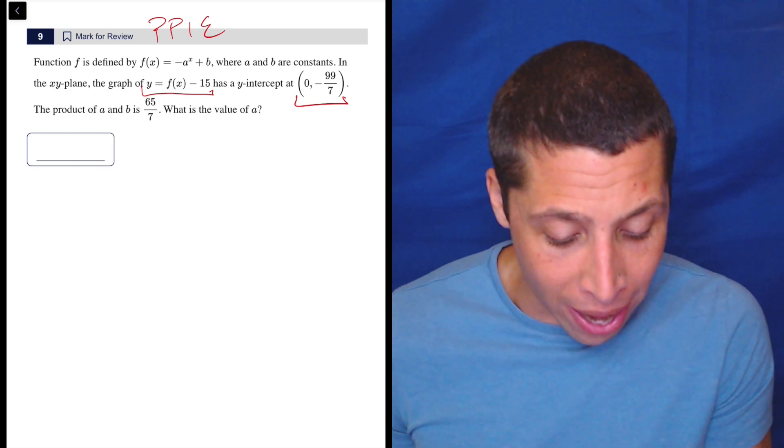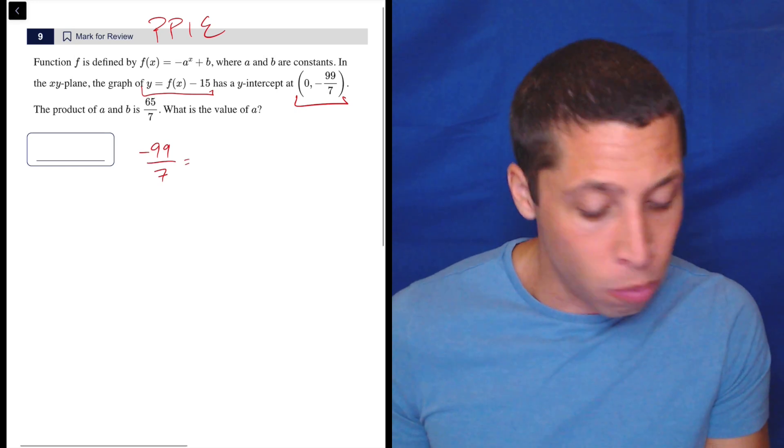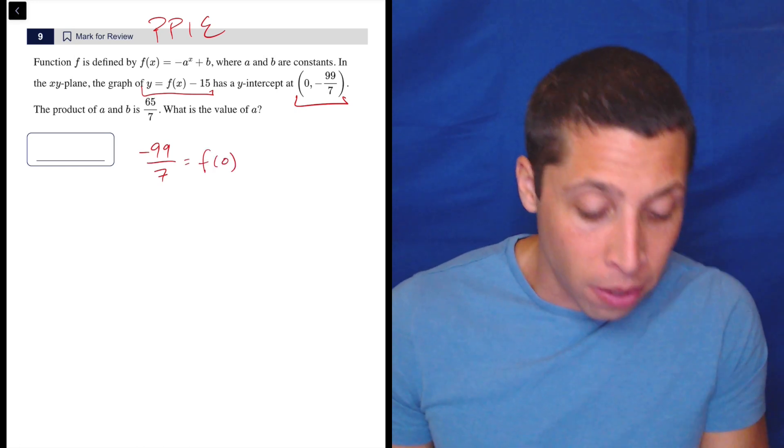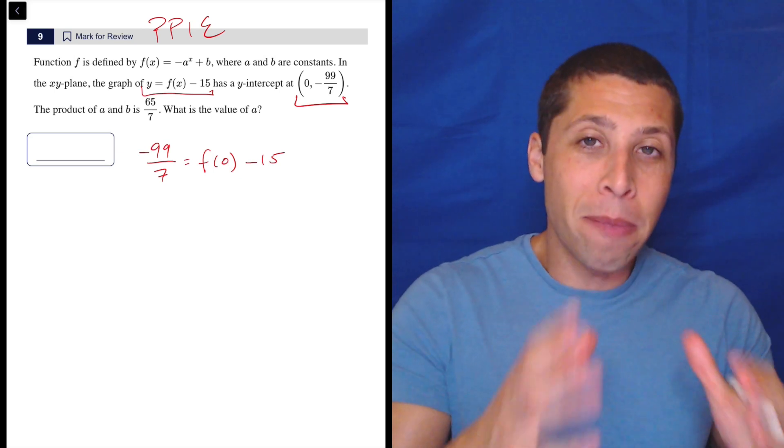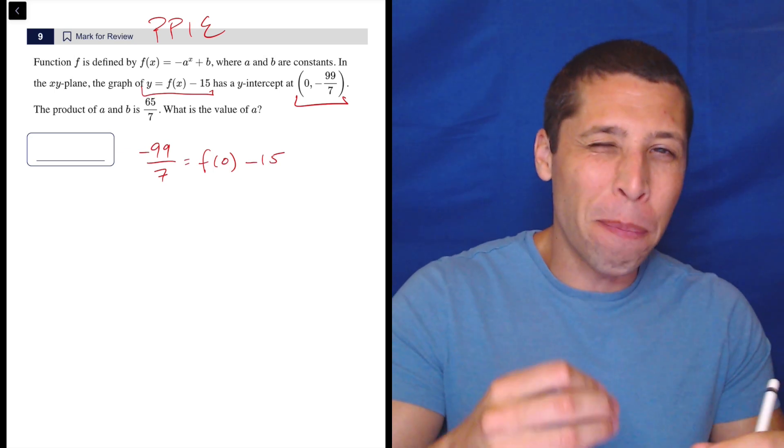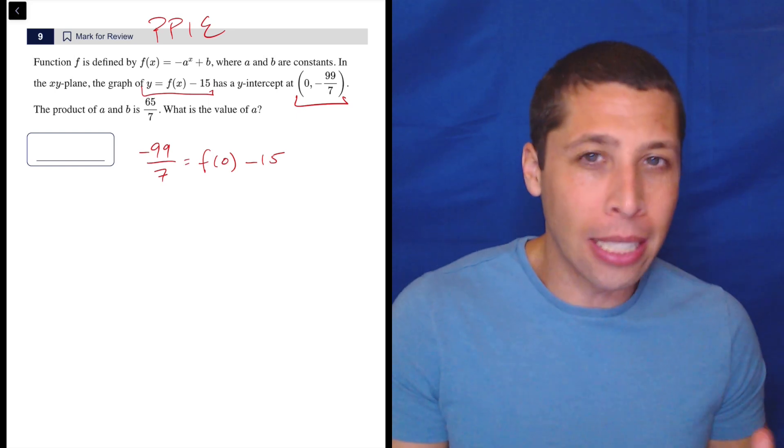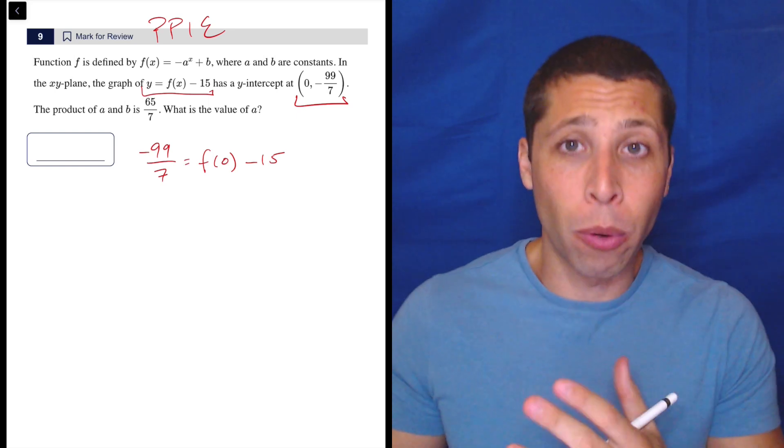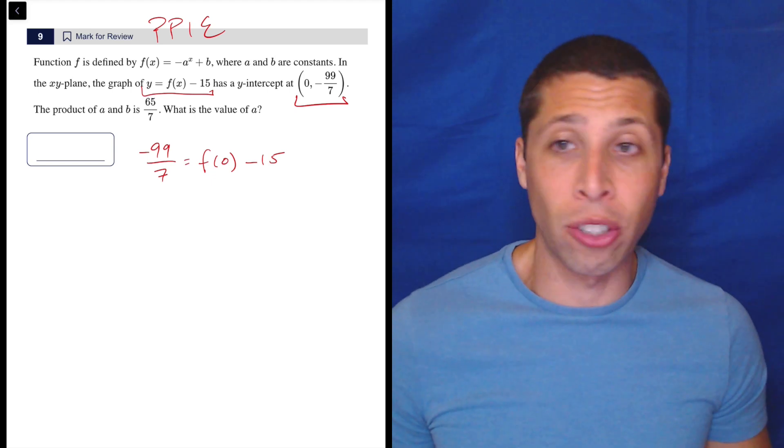I have my y-value is negative 99 over 7, and that is equal to F(0) minus 15. So it doesn't matter to me that part of the way I would plug in the point is an F(x). I have an x-coordinate, I have a y-coordinate, plug them in. So the x is zero, so my x's become zero when I plug the point in the equation.